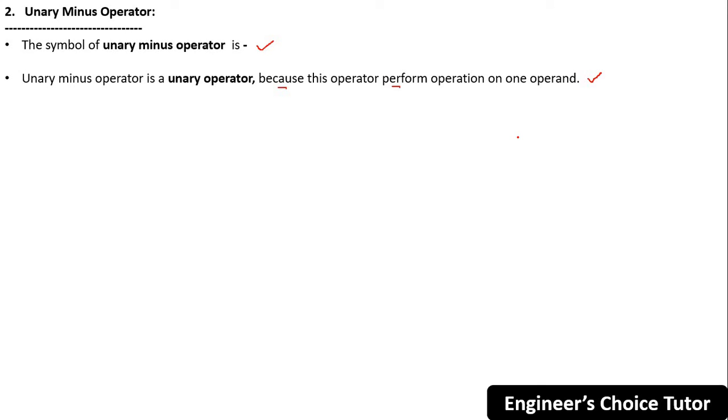So basically this operator can be used to convert a positive value to a negative value. And what is the syntax? Syntax is minus operand. So what is the purpose of this operator? To convert a positive value to a negative value. Let me show you an example.